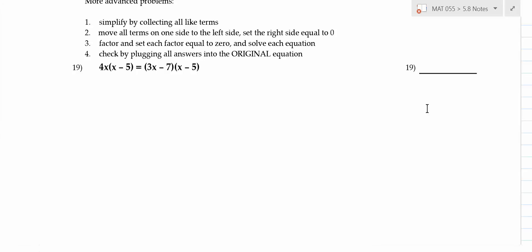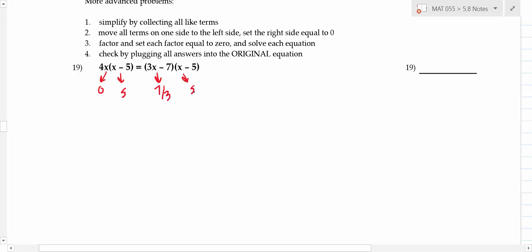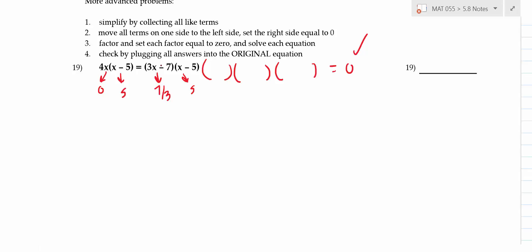Now some more advanced problems. This one looks factored, but the right side is not equal to zero. A common mistake is to set each factor equal to zero and get answers like seven-thirds — that is wrong. You must have one side equal to zero with factors on the other side. Since that condition isn't met, you have to multiply everything out, get everything on one side, collect like terms, and then factor.